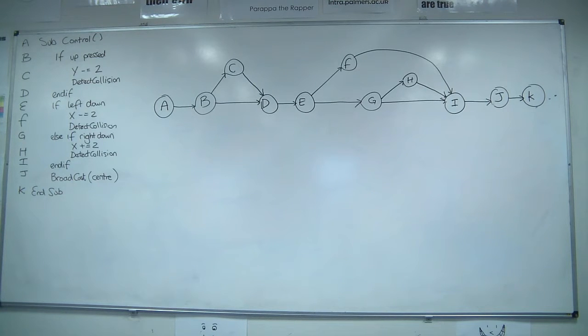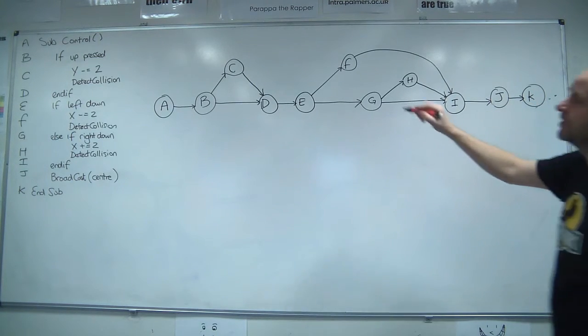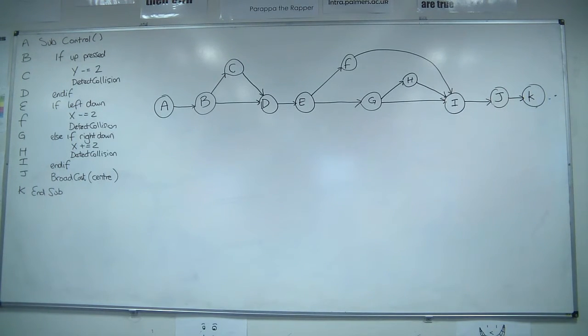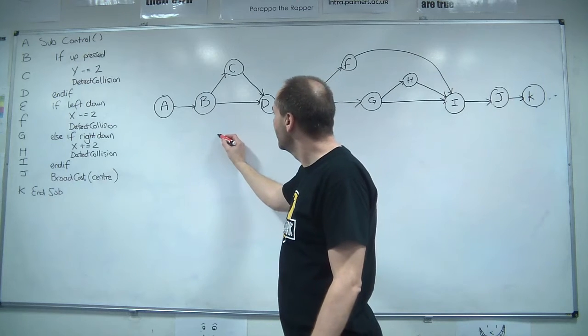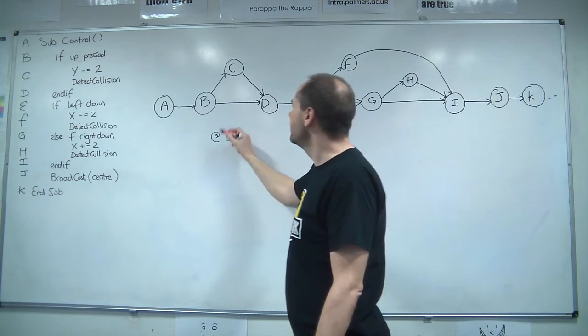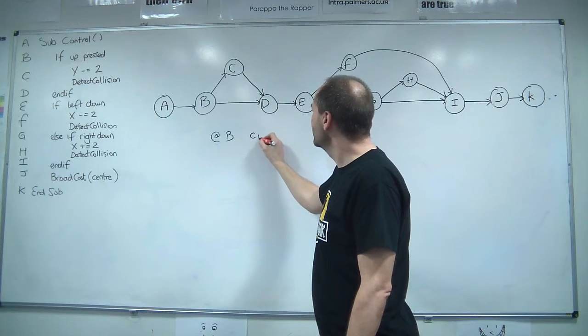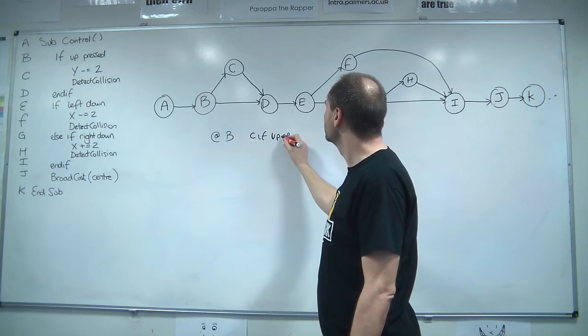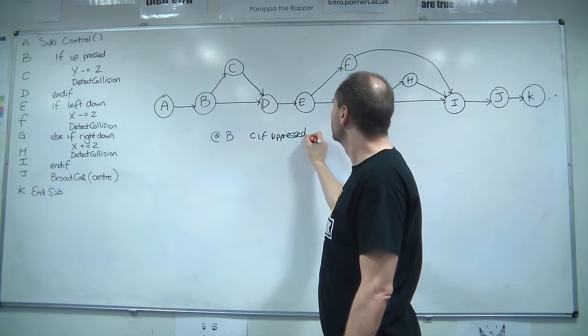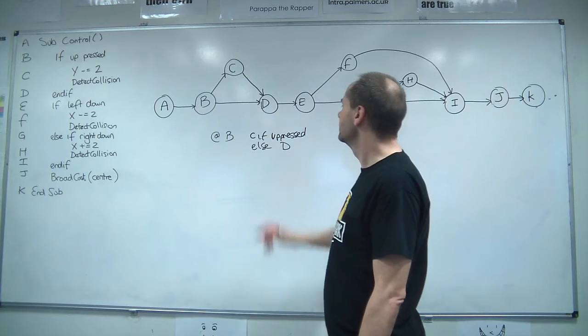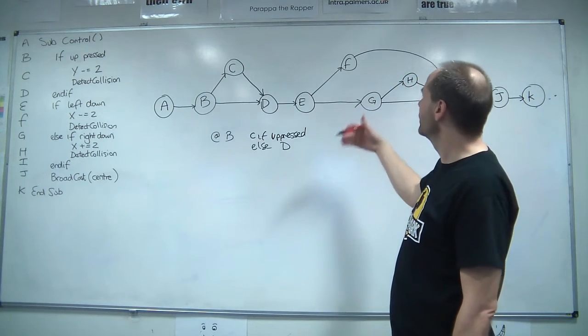Then you make a little table and you say at each one of the decision points, and you can see a decision because there's two lines come out of it. You can say at B, and then just say why did we do C? So if we look back, C if up press, or you can say else D. And then just do that for each one.